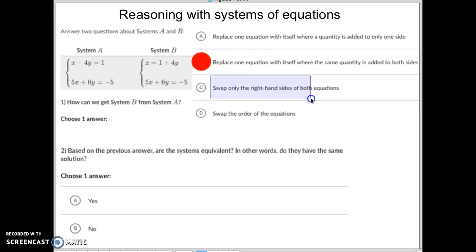Did they swap only the right side of both equations, meaning that they mix these numbers up? And no, they didn't mix those numbers up, so that's not what they did. Did they swap the order of equations? Nope, the bottom equation is still the bottom equation. They just rewrote this one as we said.